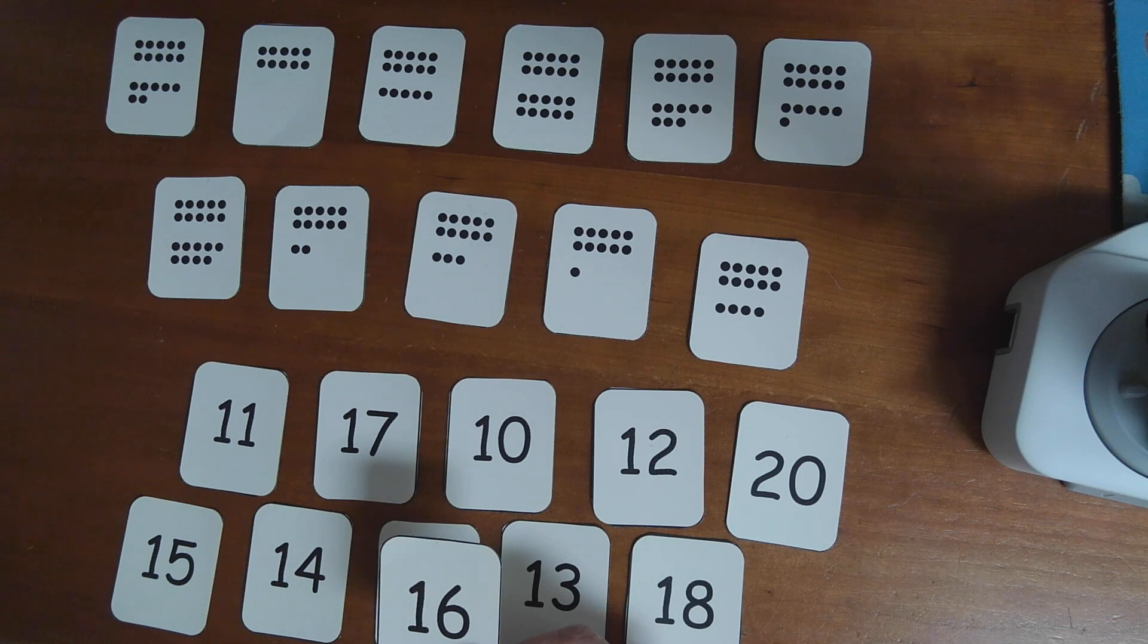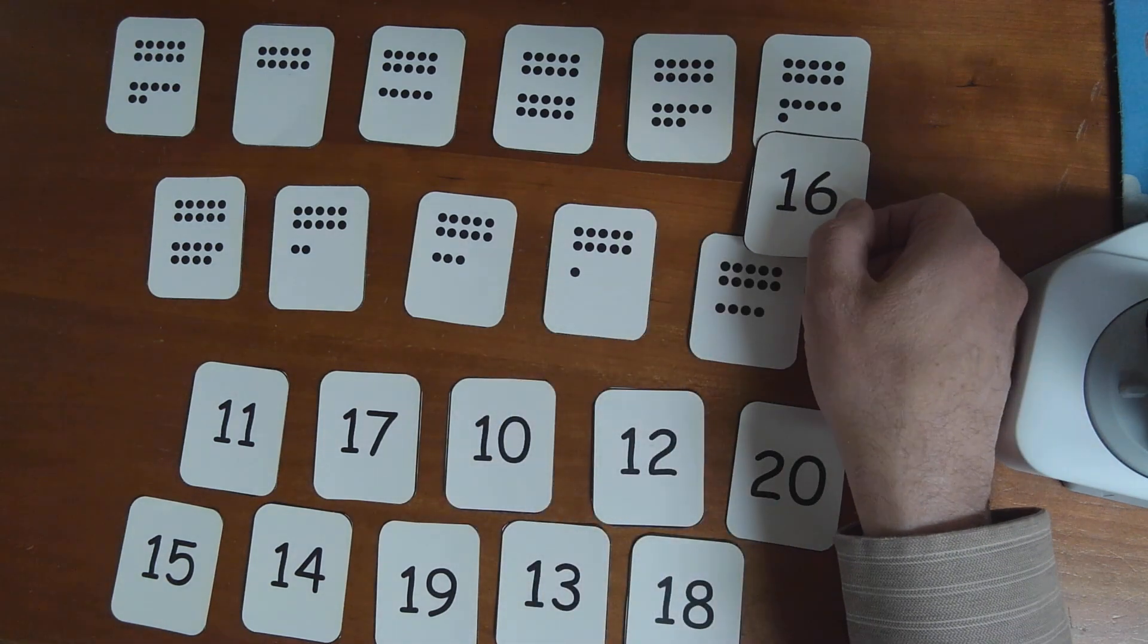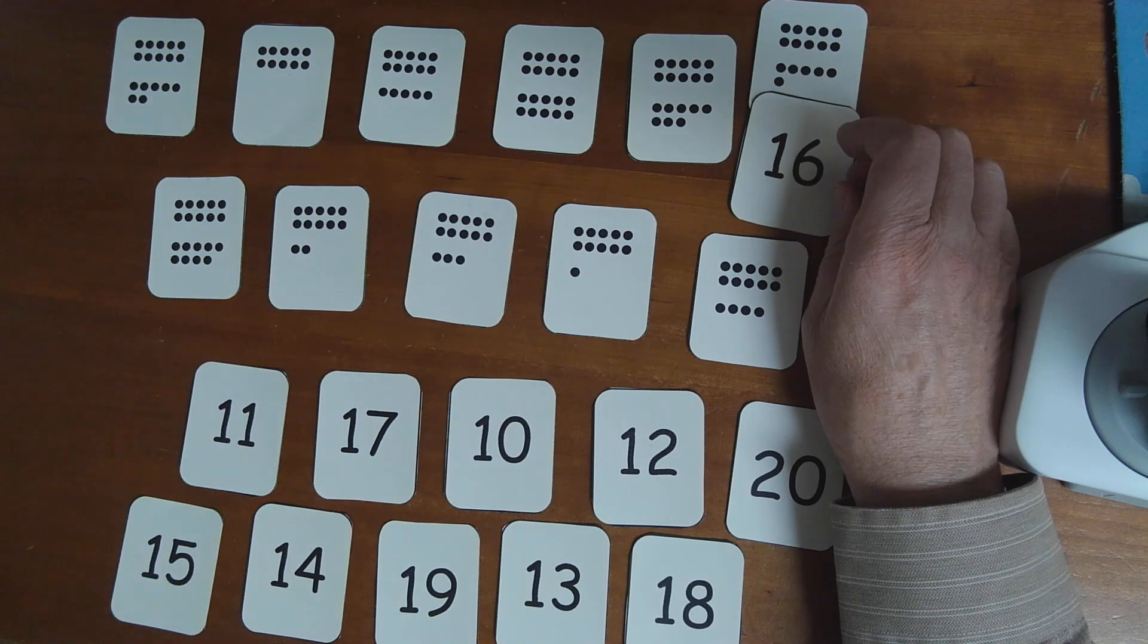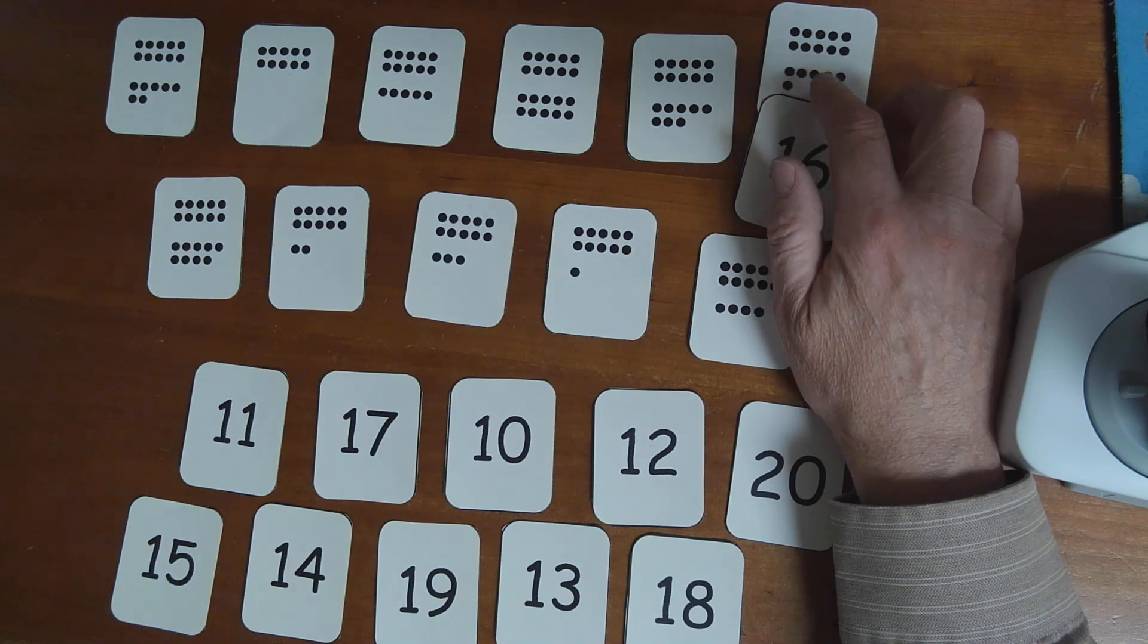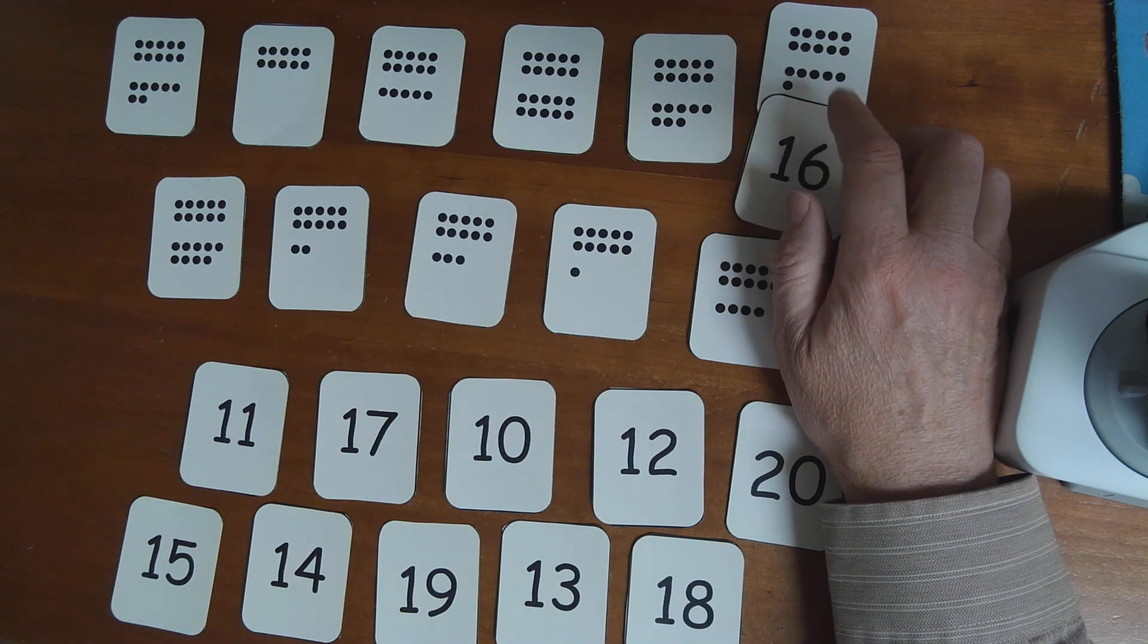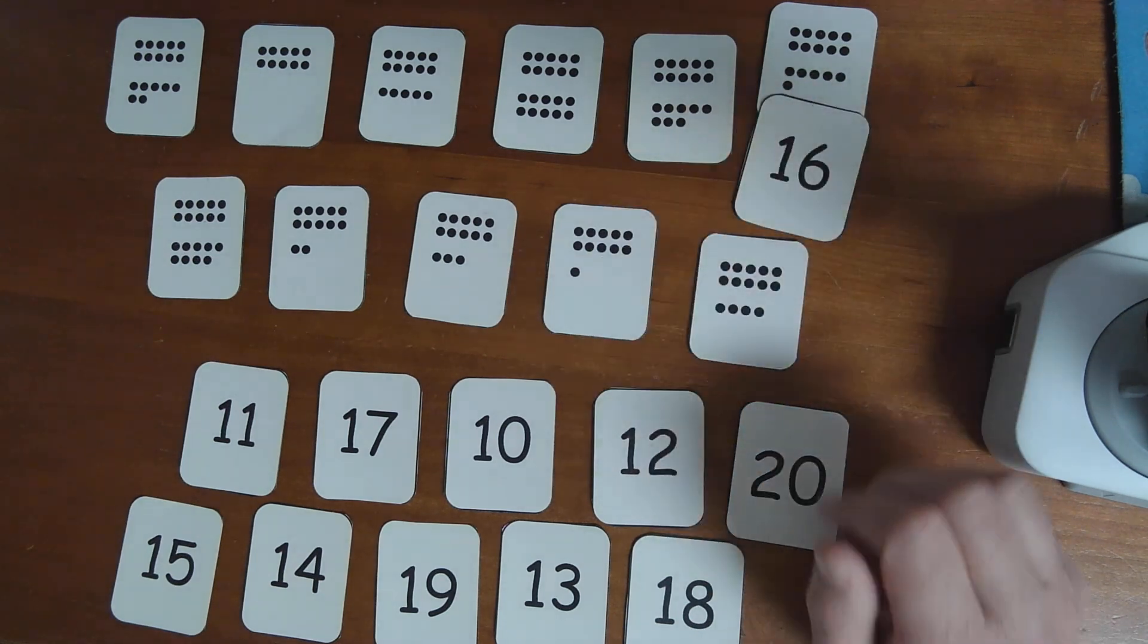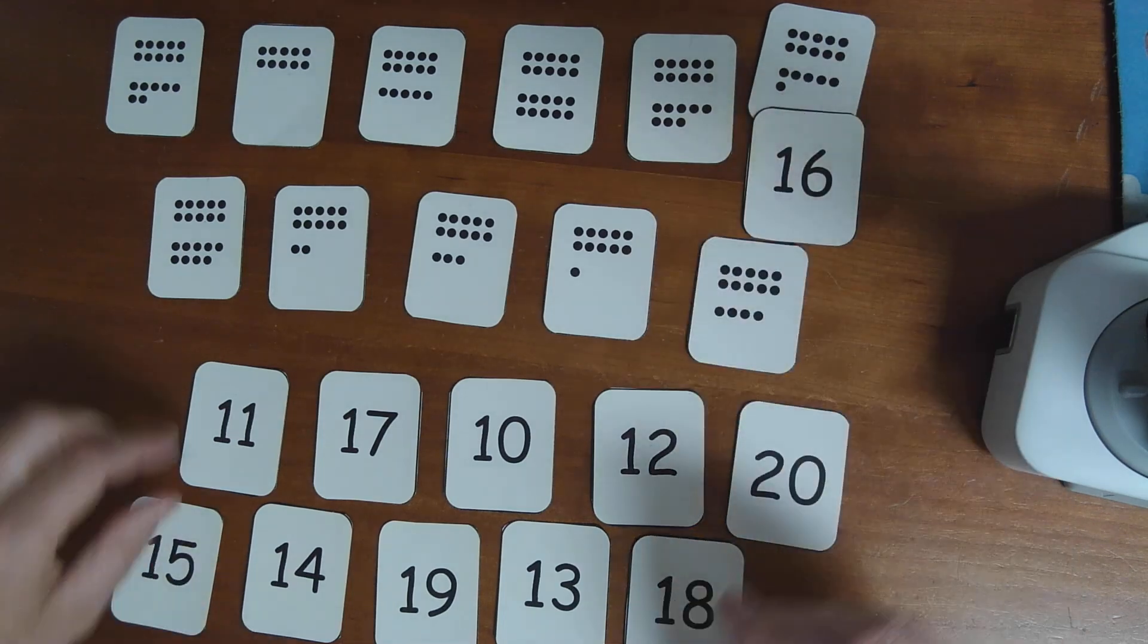16. All right, so where does 16 show up on the board there? Look around, see if you can find 16. And I'm going to tell you that it matches right here. 16, do you see? 10 and 6. 16. 1, 2, 3, 4, 5, 6. Okay, so there's 16.